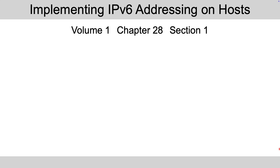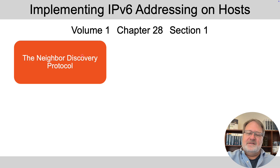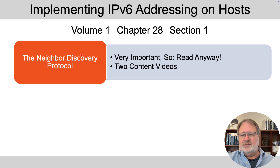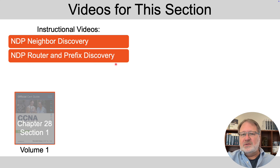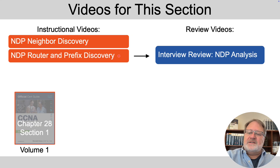Thanks for sticking around till the end. If you've got the books, look at Volume 1, Chapter 28, Section 1 — the one about IPv6 from the host perspective. That first section is about the Neighbor Discovery Protocol, and in my opinion it's a very important topic. So even if you understand everything in this video and the associated other video about this section, read the content in the book anyway — you want to master this. Watch both content videos: this one about neighbor discovery, and the next one about router and prefix discovery. Then there is an interview review video that goes through everything in both of those, which I'll set up at the end of the router and prefix discovery video.